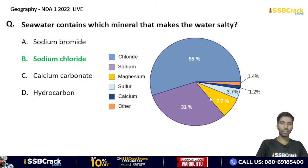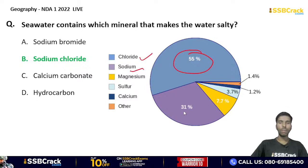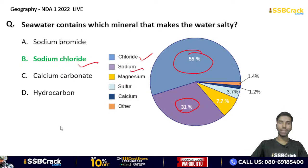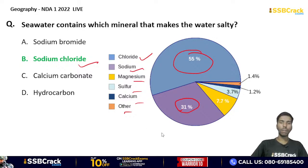Looking at the seawater composition pie chart: chloride is more than 55%, sodium is 31%, and together sodium chloride (NaCl) accounts for about 86% of seawater composition. Other components include magnesium, sulfur, calcium, and others. The chemical formula for sodium chloride is NaCl — Na for sodium, Cl for chlorine.